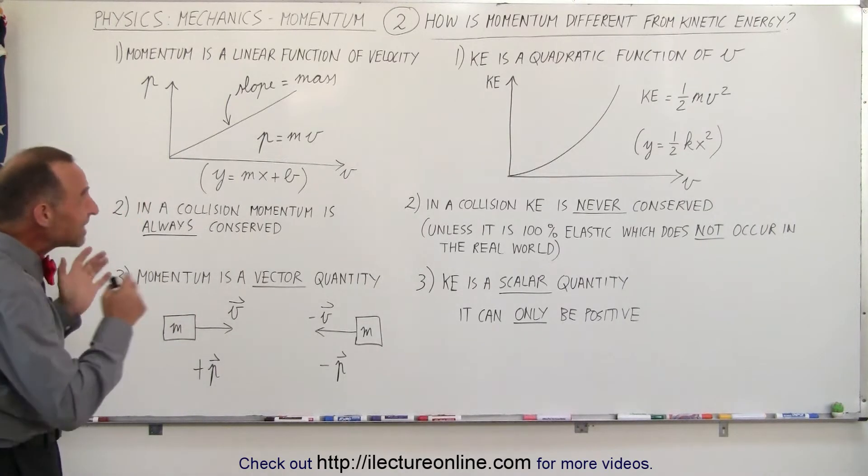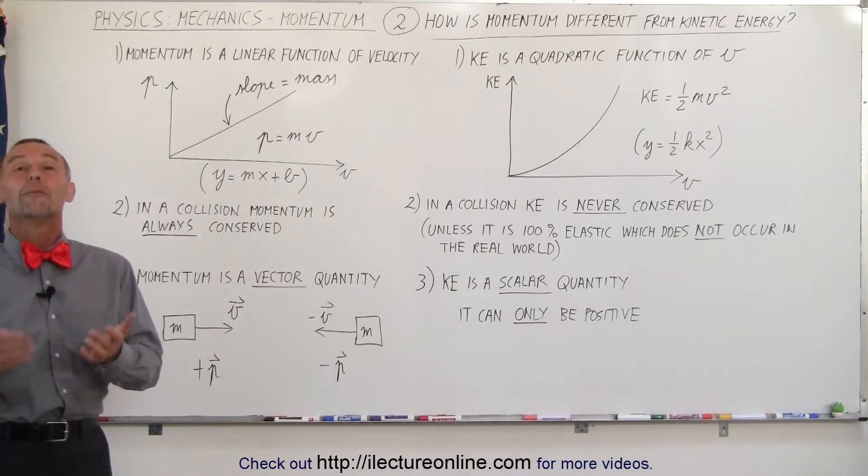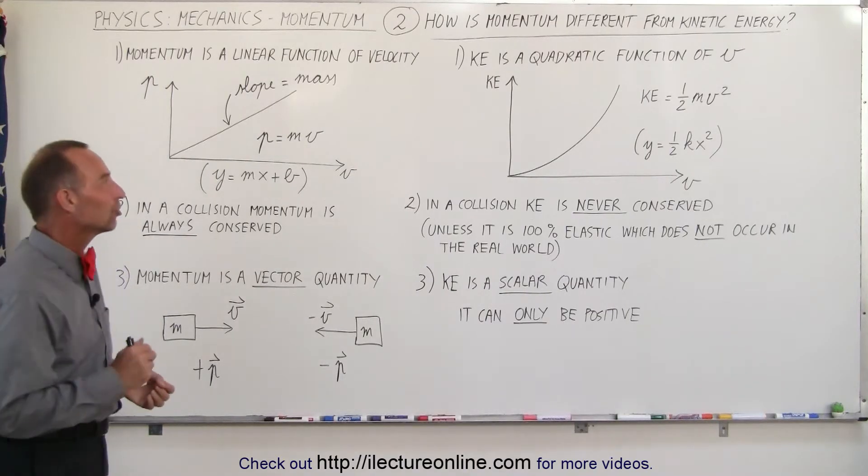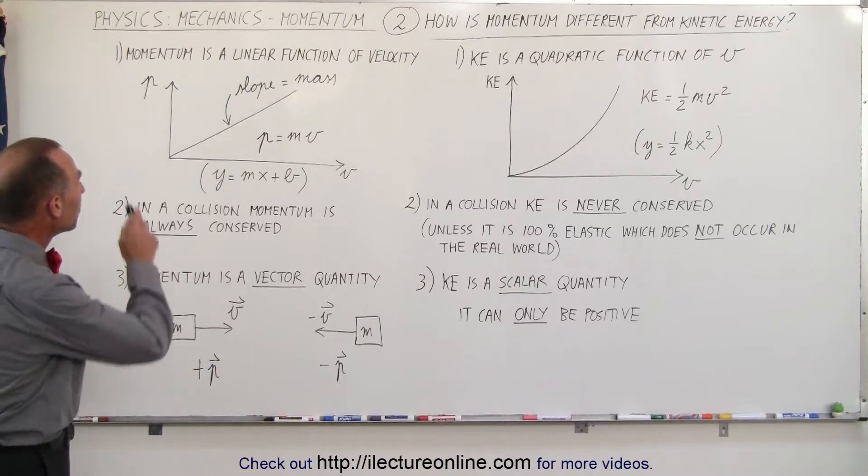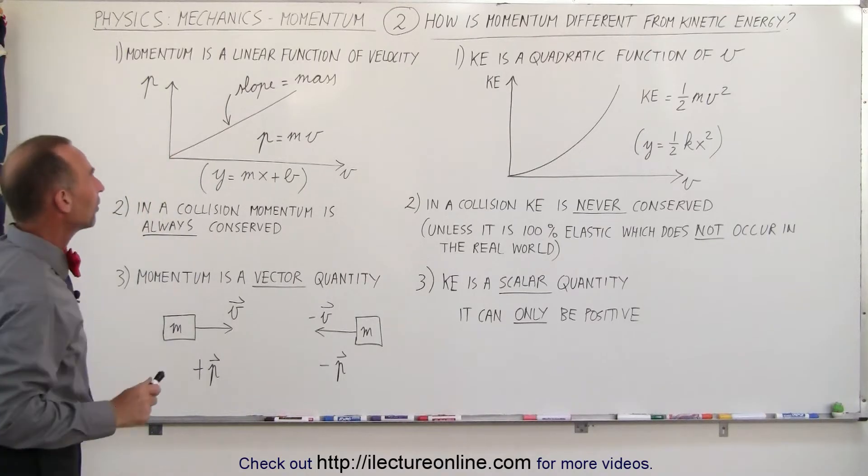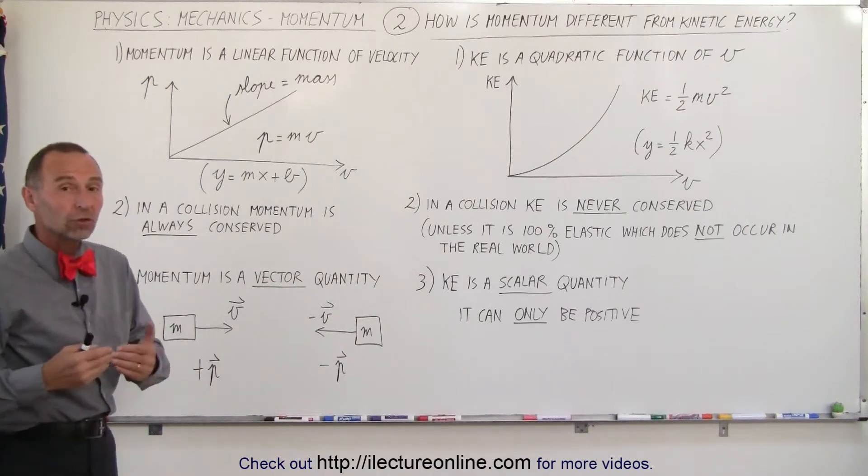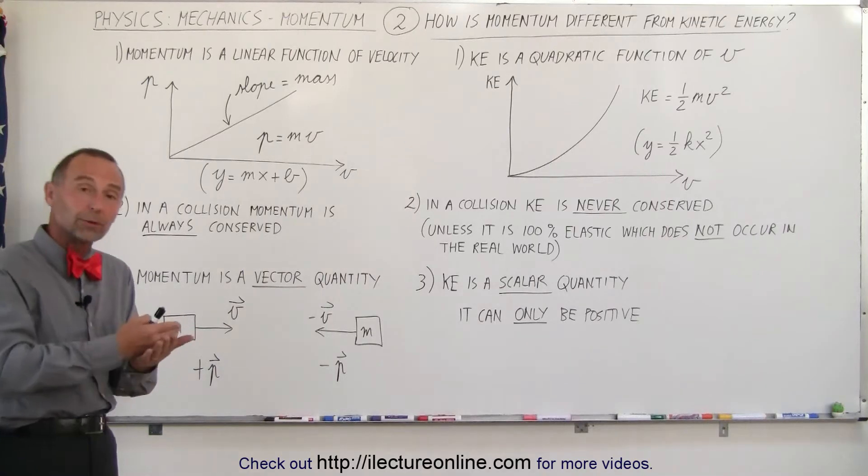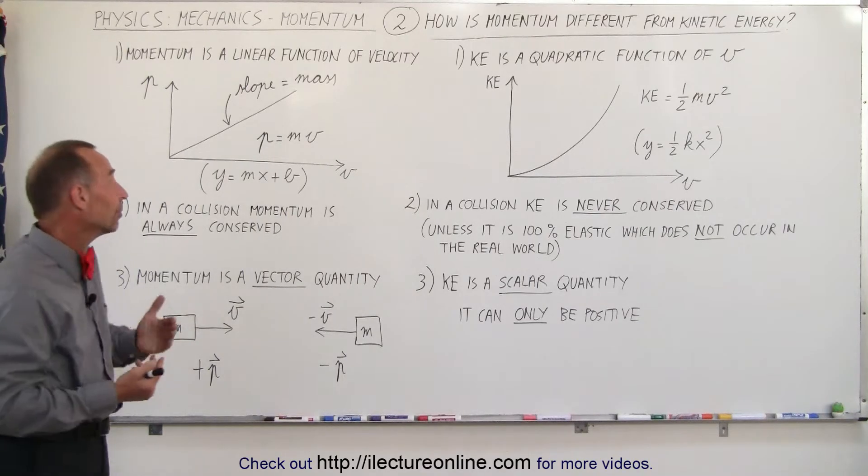There are three main differences between momentum and kinetic energy. First of all, momentum is a linear function of velocity. In other words, you double the velocity, you double the momentum. You triple the velocity, you triple the momentum.